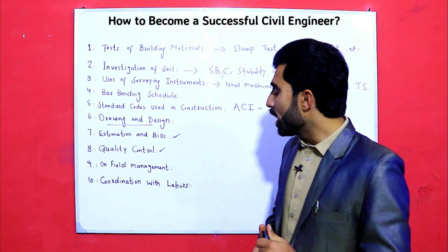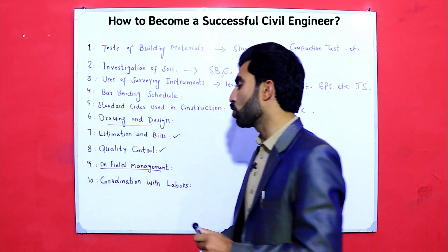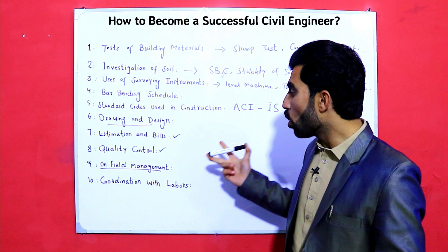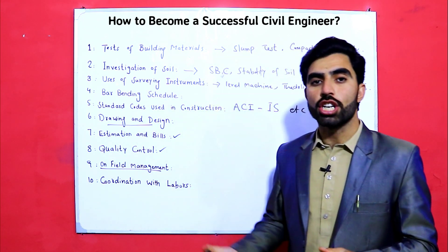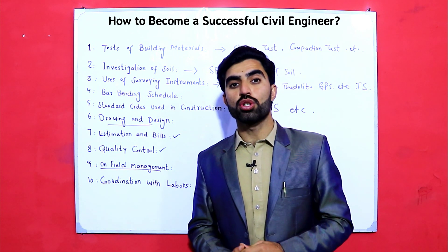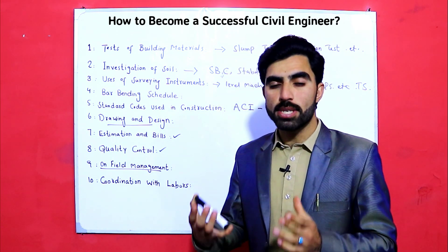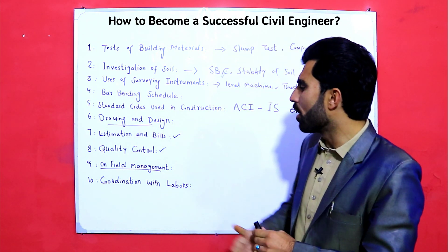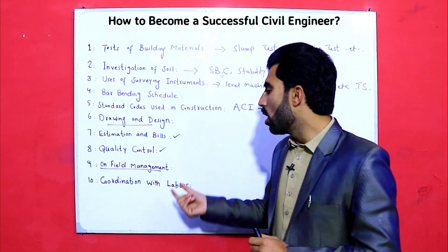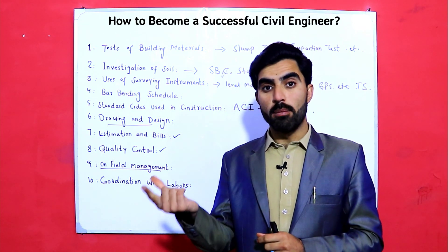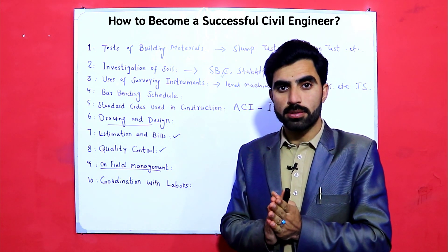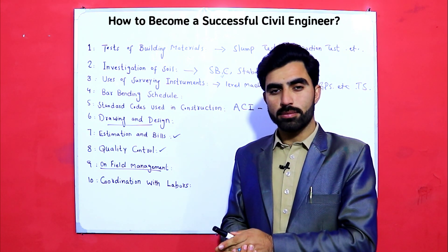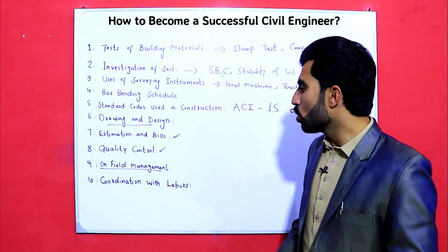The ninth requirement is on-field management. Every civil engineering student should know on-field management if they want to become a good civil engineer. This includes formwork and shuttering — how to measure beams, columns, and slabs, how to find volume, the density of different materials, how to fix formwork, check formwork, and removal of formwork.